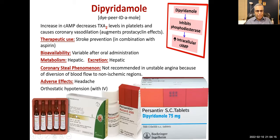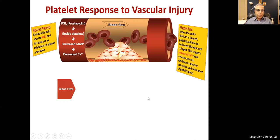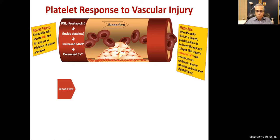Dipyridamol is available in IV formulation only as well as capsules and 75 mg tablets. There was some confusion yesterday — PGI2 is prostacycline; it increases cyclic AMP levels. Increased cyclic AMP decreases calcium and eventually leads to inhibition of platelet aggregation. That clarifies one point from yesterday's lecture.